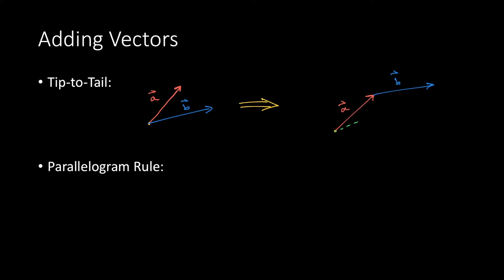The resultant vector is drawn in green here from the tail of the first vector to the tip of the final, or in our case second vector, since we only have two.